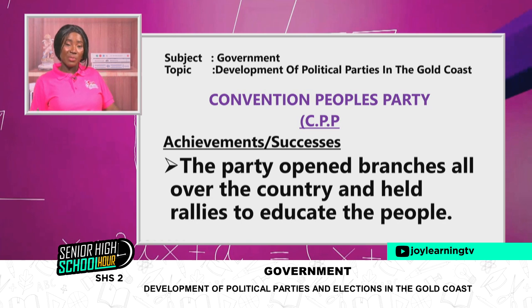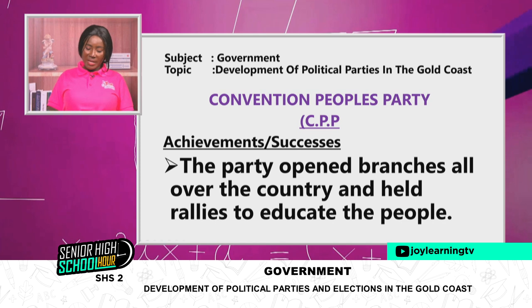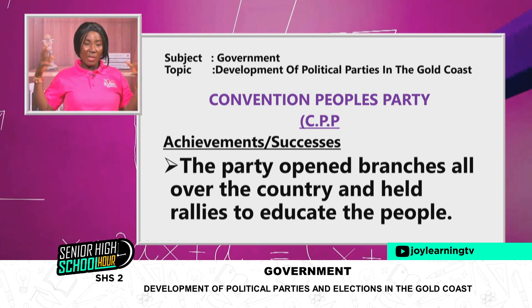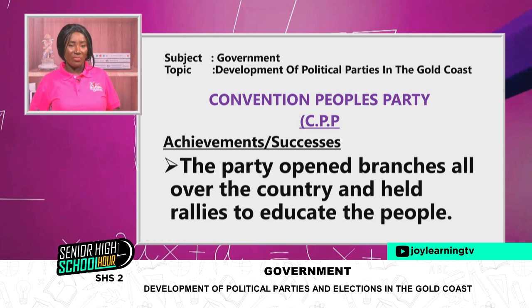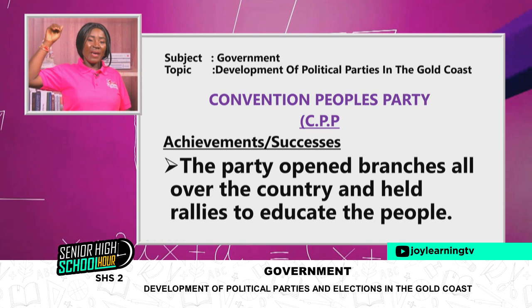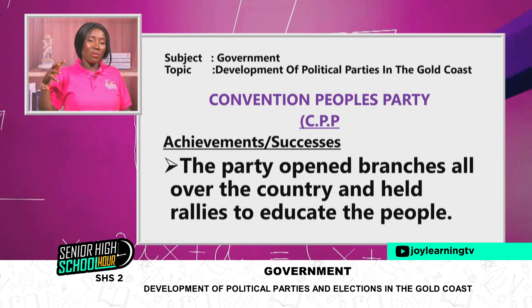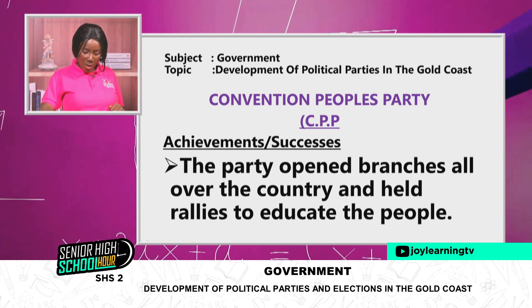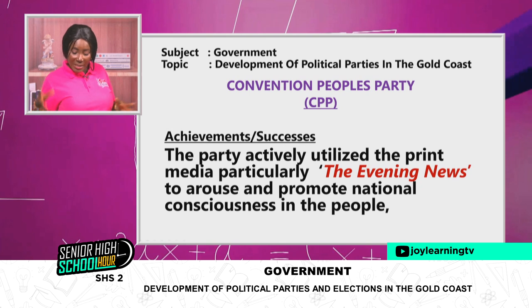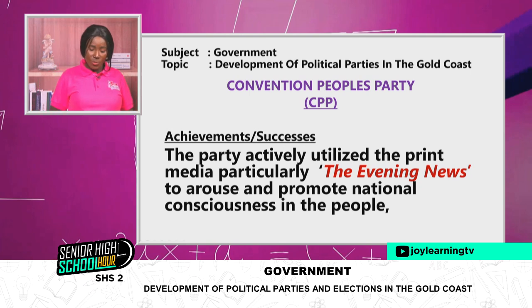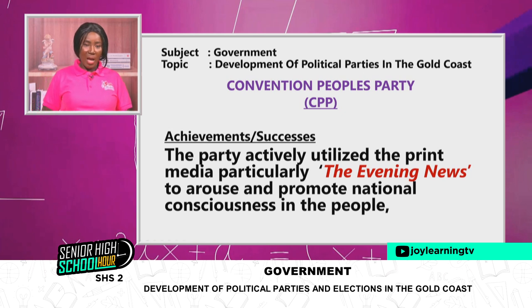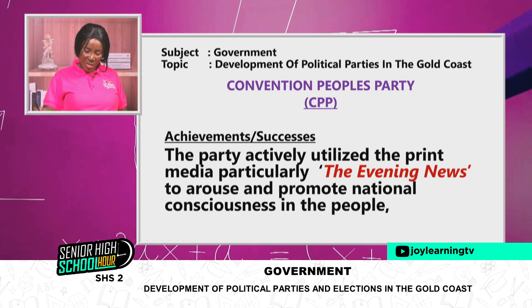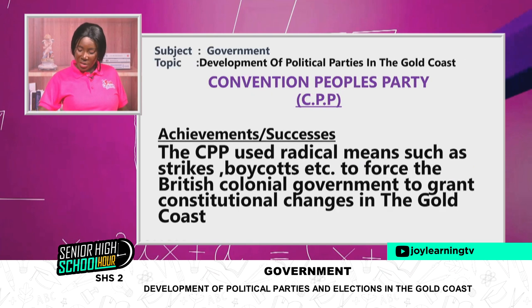Now let's look at some successes of the CPP. The party opened branches all over the country and held rallies to educate the people, which was new for the first time in the Gold Coast. Dr. Kwame Nkrumah sent the CPP to all areas — to the hinterlands — to rally the people and get their support towards independence. The party also actively utilized the print media, particularly the Evening News, to arouse and promote national consciousness.